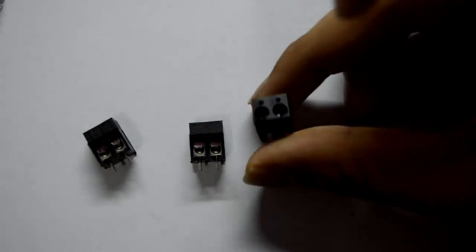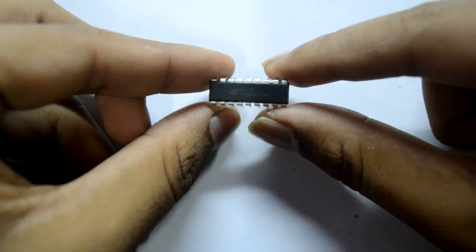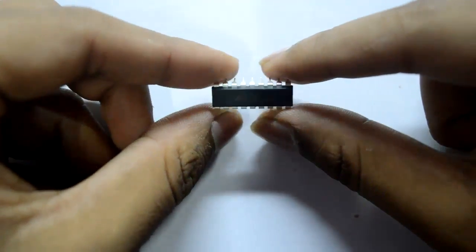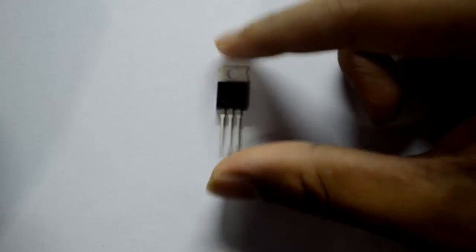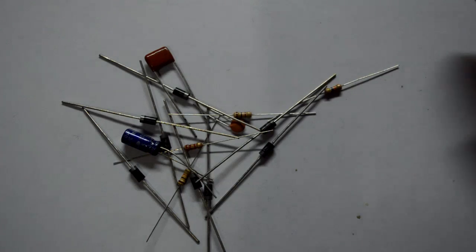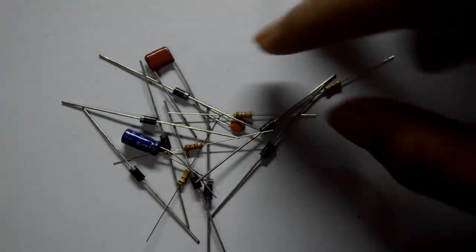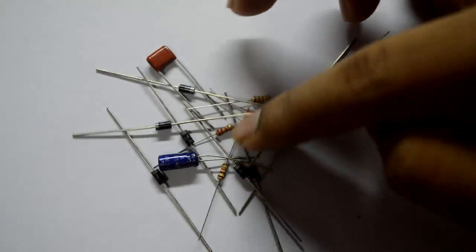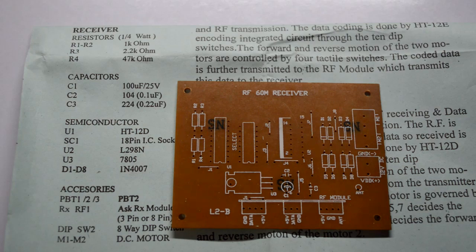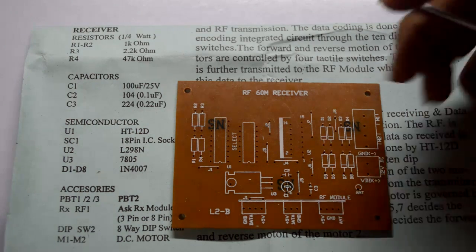Here are some of the input terminals for motor and battery. This is IC HT-12D, the decoding IC on your receiver, and this is 7805 regulator from 12 volts to 5 volts, and some other components such as resistors. We have a few capacitors and we have diodes. Let's begin the soldering of our receiver first.